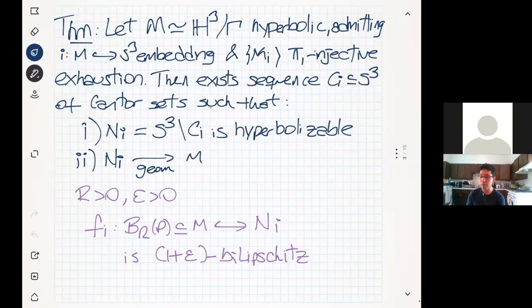Quick reminder about what I mean by geometric convergence: given some fixed basepoint, given any radius R, given any small enough constant epsilon, for sufficiently high terms in your sequence, there is going to be a bilipschitz map between the R-ball in M and its image in Ni.